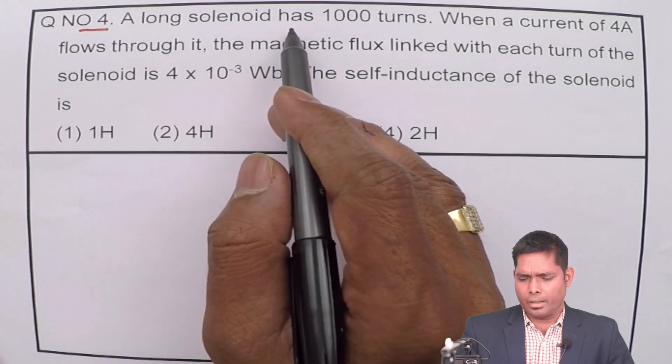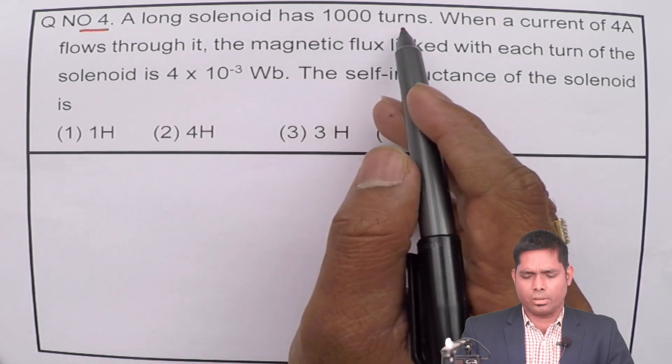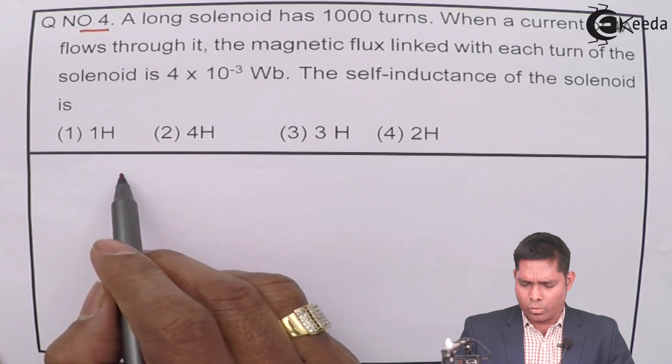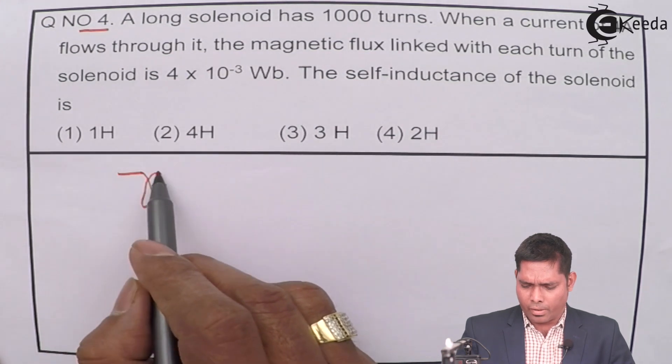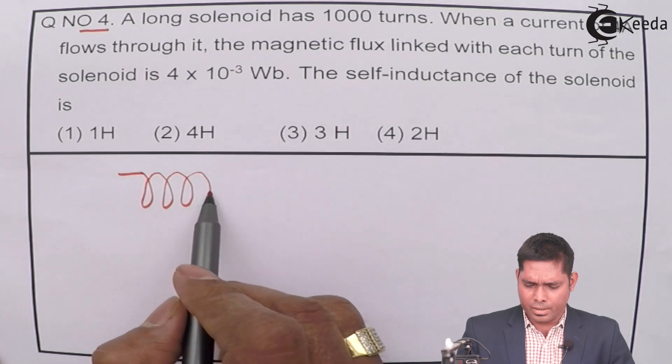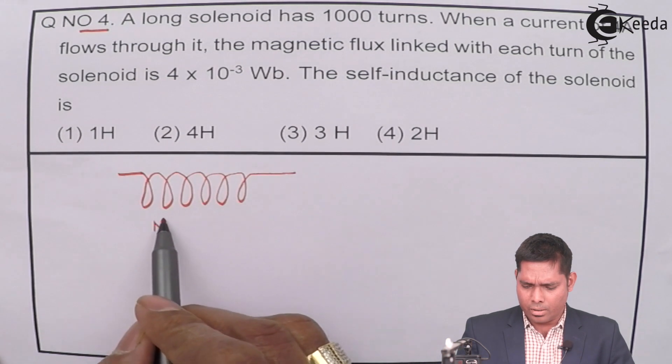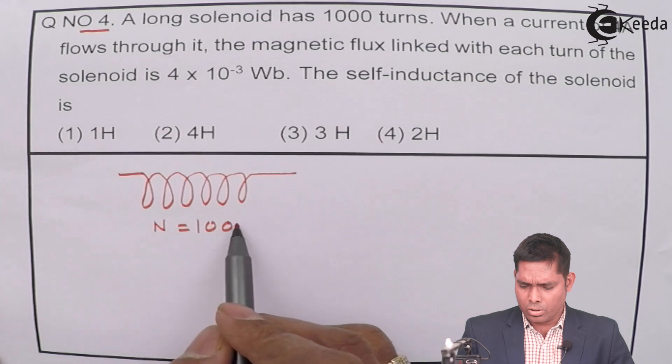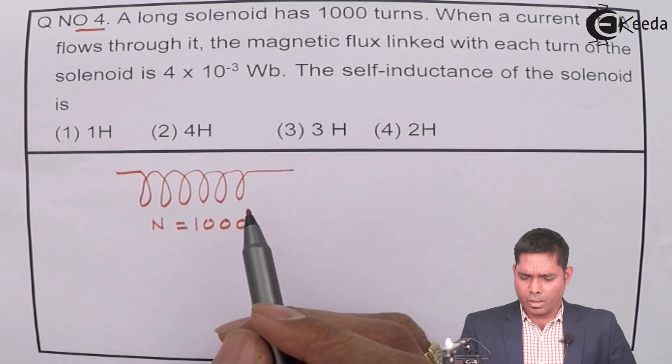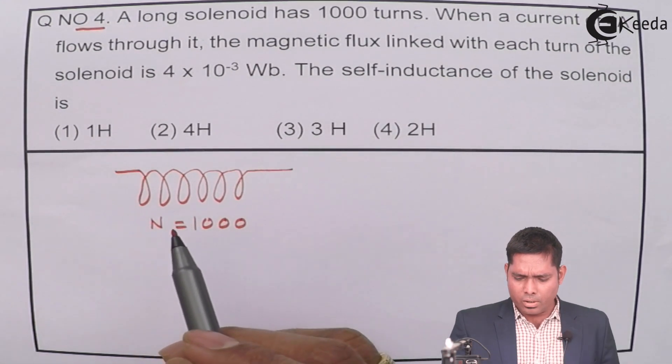The question says a long solenoid has 1000 turns. You might have seen a solenoid, which is like a spring and it has 1000 turns.